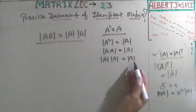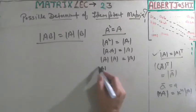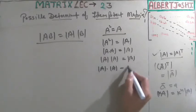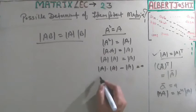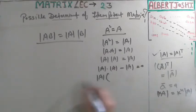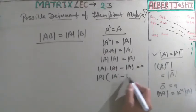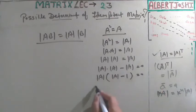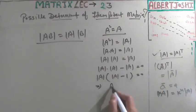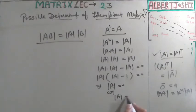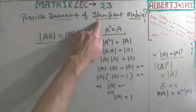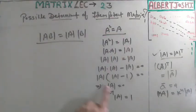So it comes that det(A) times det(A) minus det(A) is equal to 0. Taking det(A) outside, we get det(A) times (det(A) minus 1) is equal to 0. This implies that the possible determinant will be either 0 or 1. So the possible determinant of an idempotent matrix is either 0 or 1.